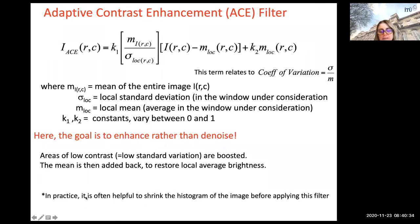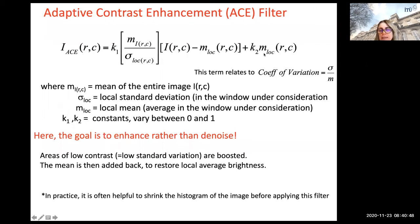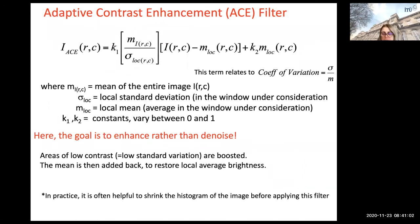Here is a practical tip: it is often helpful to shrink the histogram of the image before applying this filter. Because when we do these scalings by K1 and K2, we may be really boosting the intensity too much, causing overflow or underflow — values outside the 0 to 255 range — and we would see artifacts in the image if we don't deal with those.